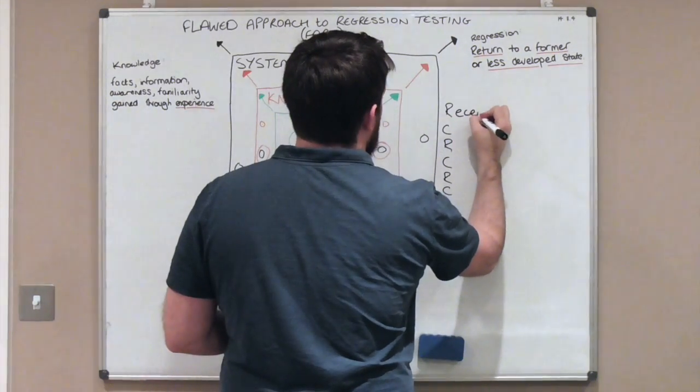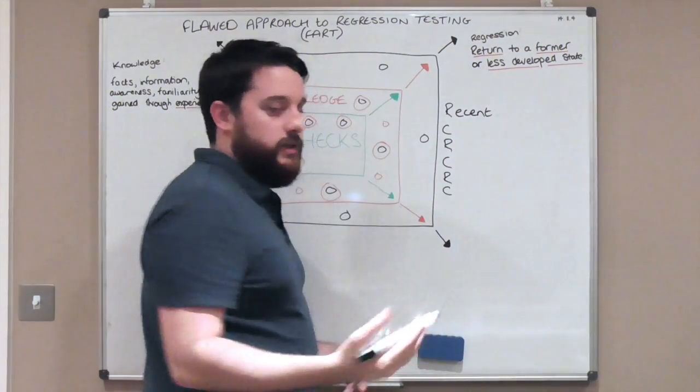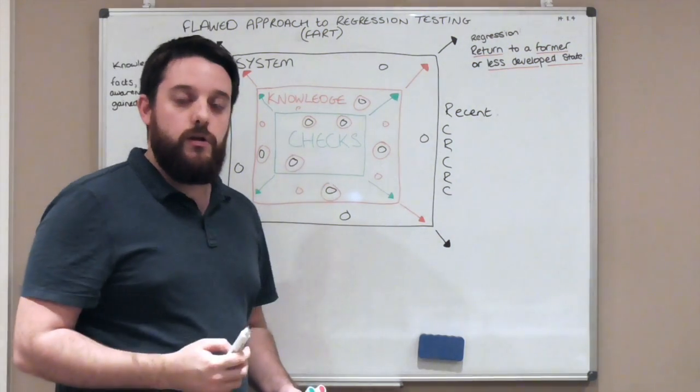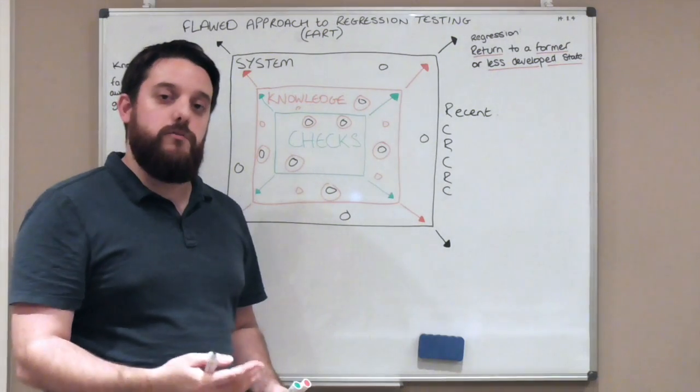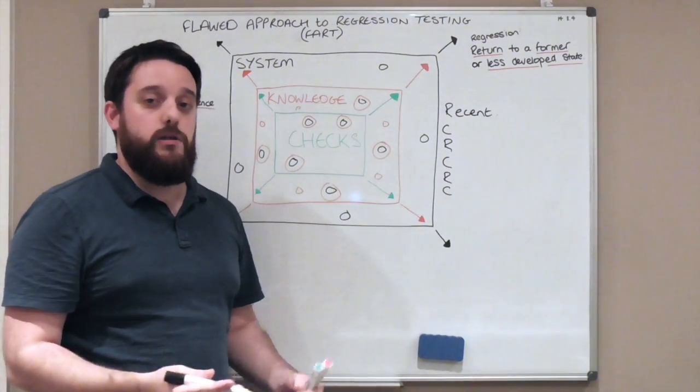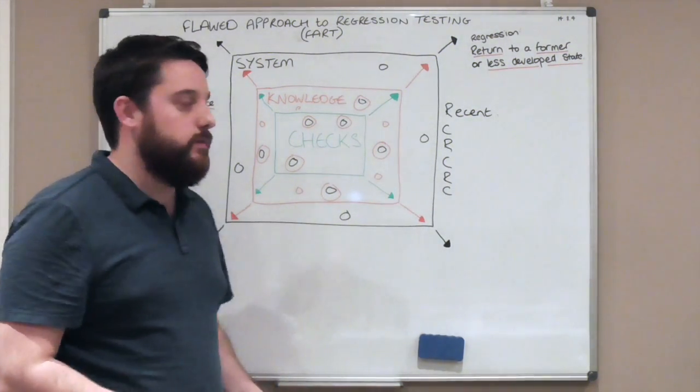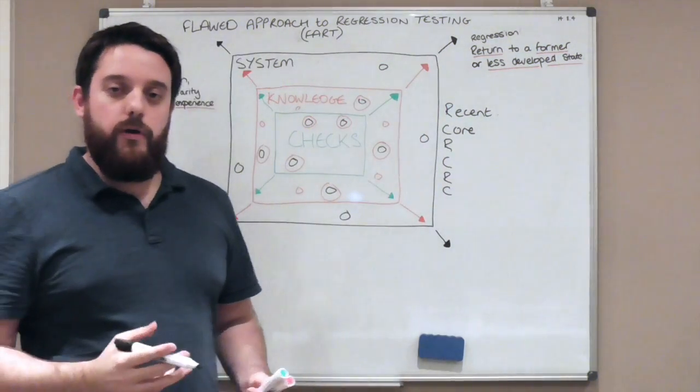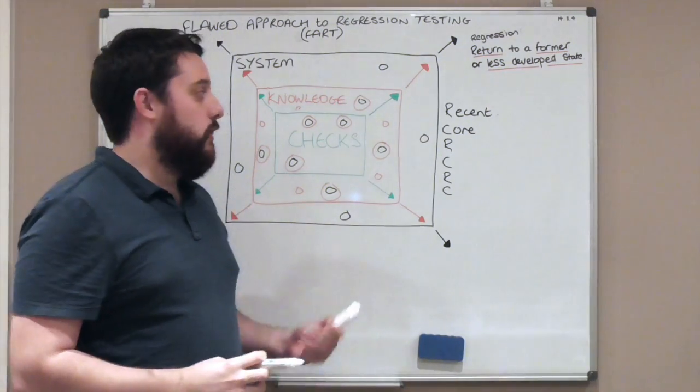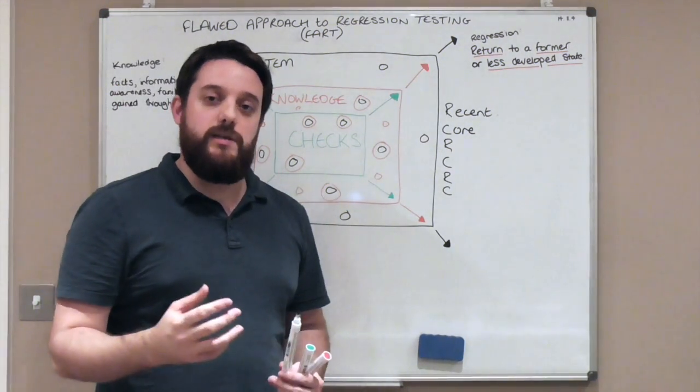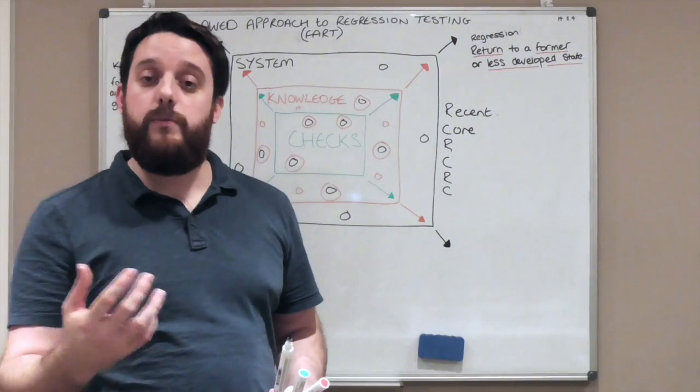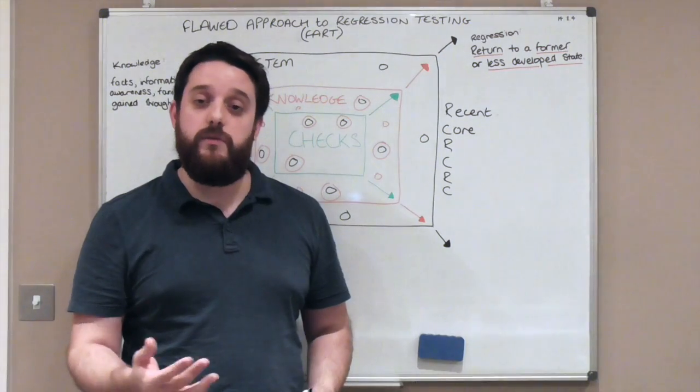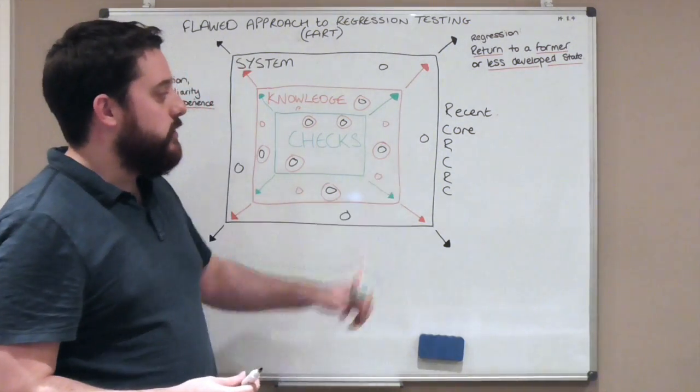The first one is Recent. What's recently changed in the system that may lead to some test happening? You might have a new feature, but now you need to go and see how that new feature may have impacted other areas. You don't have to wait for the end to do that. You could do that whilst testing the new feature. We also have Core.